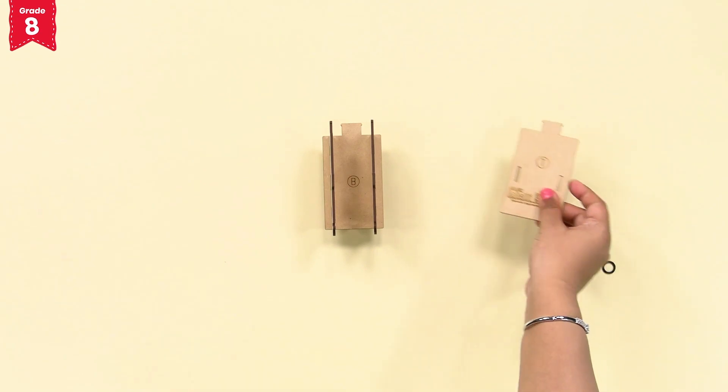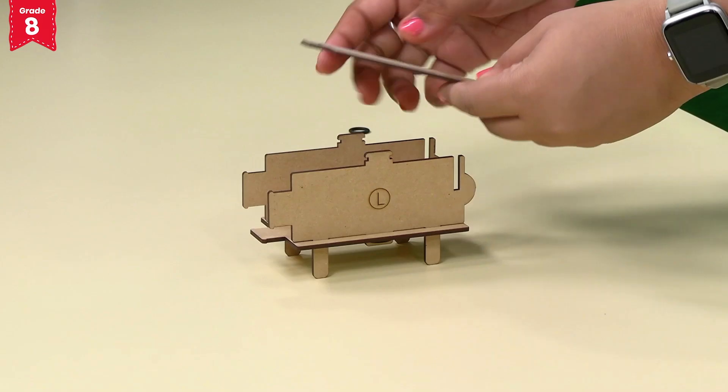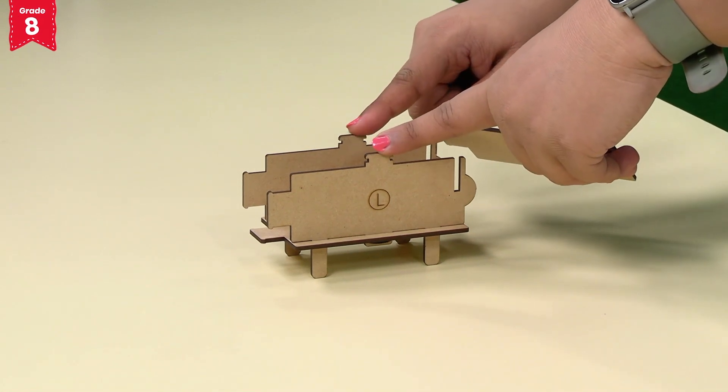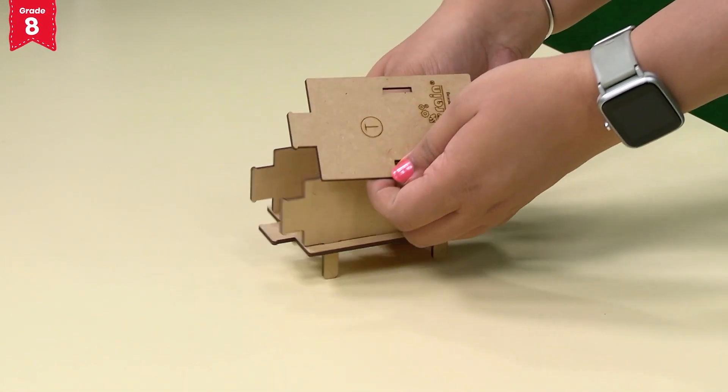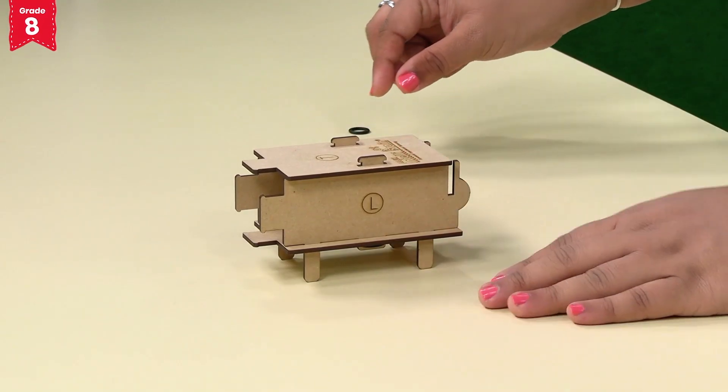Now, fix the slits of the plate T onto the extended parts of the plates L and R like this. Secure this with O-rings as well.